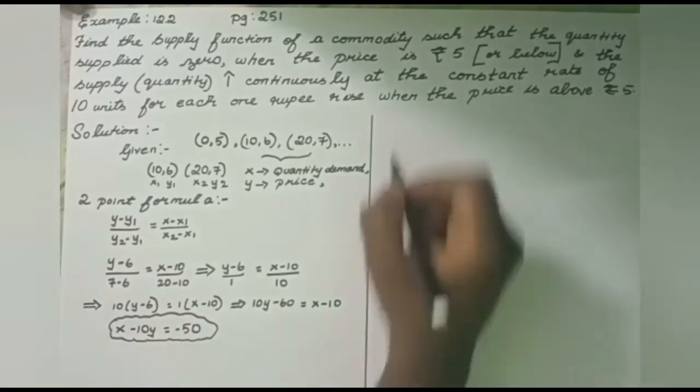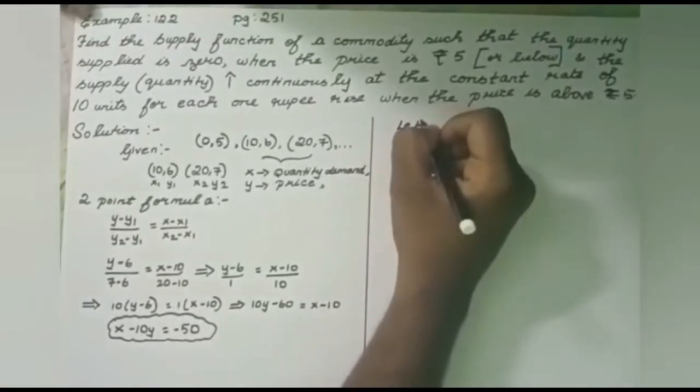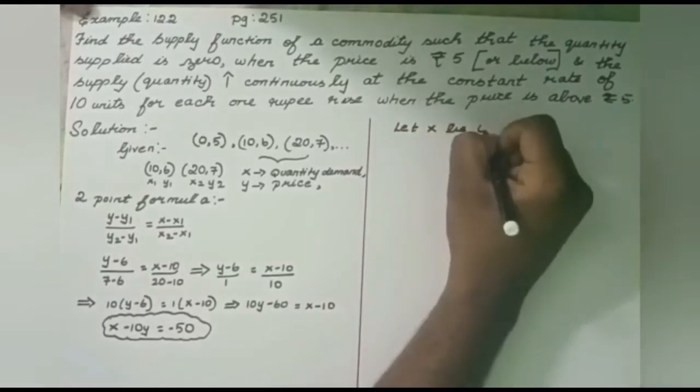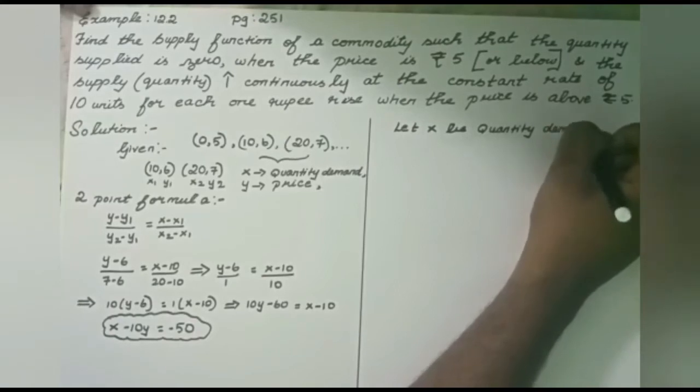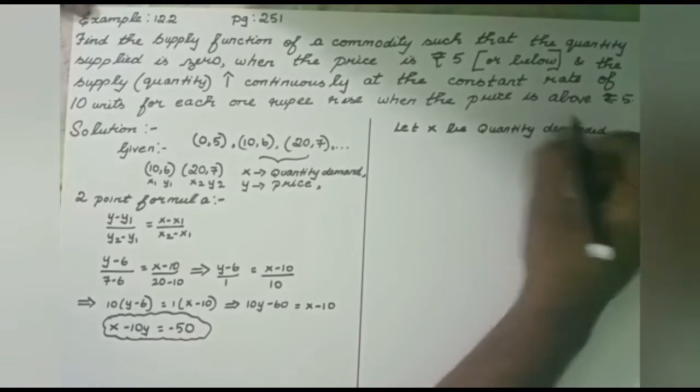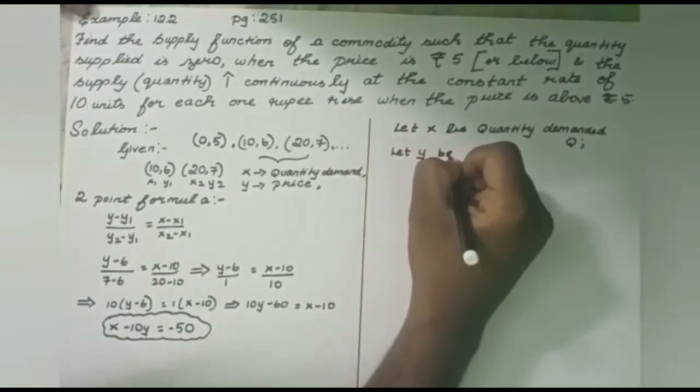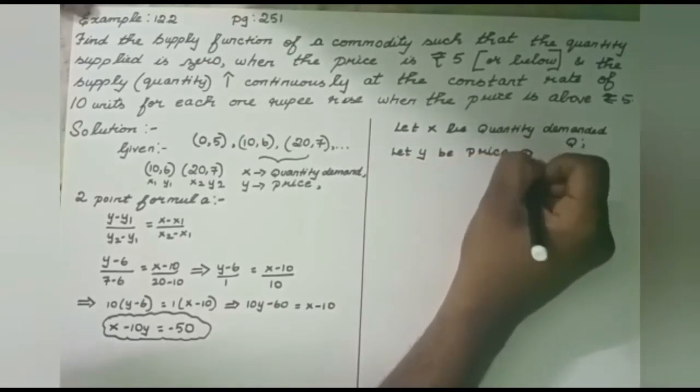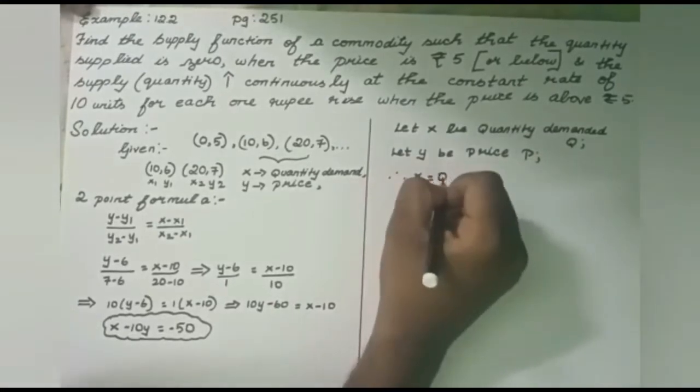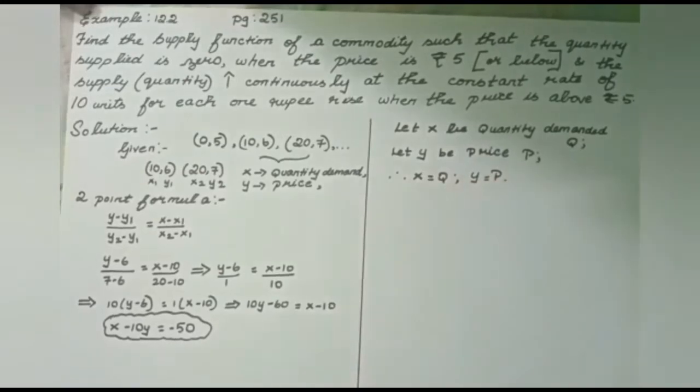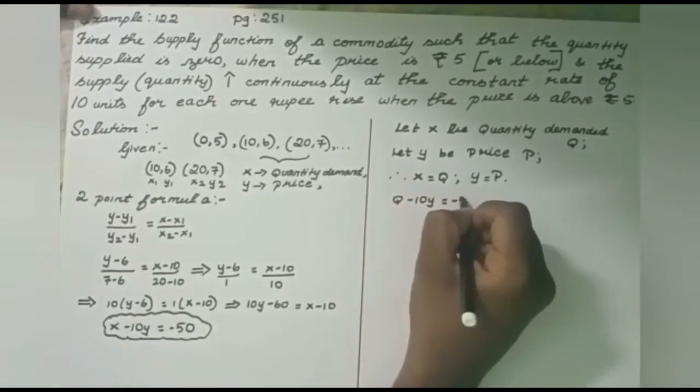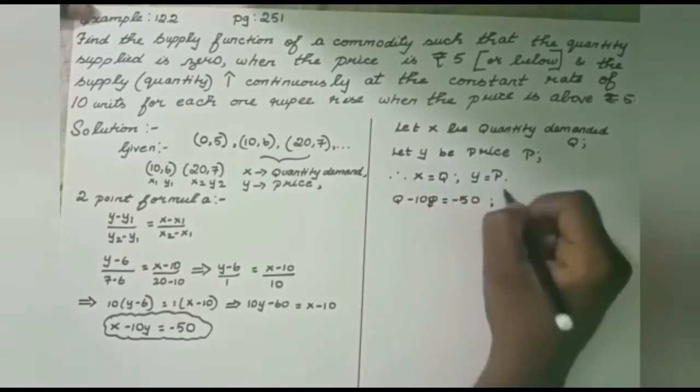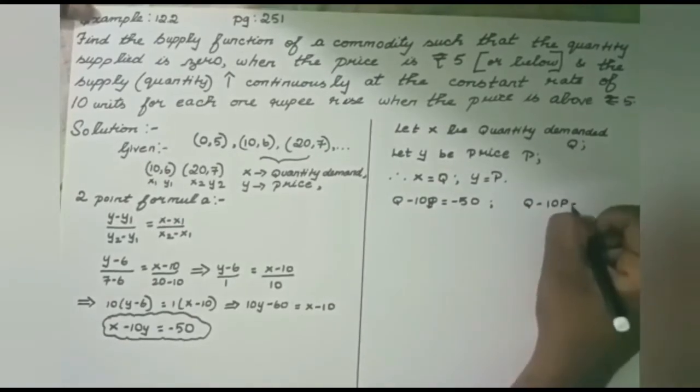Make yourself clear that we'll do cross multiplication. So 10 of y minus 6 equals 1 of x minus 10. Further simplification gives 10y minus 60 equals x minus 10. Keep in mind that x value should be positive, so we keep x term as is and shuffle the remaining terms. So x minus 10y equals minus 50. This is our derived answer. Now we apply this to the question by considering the words given. Let x be quantity demanded Q and y be price P. Applying x as Q and y as P, the equation further changes to Q minus 10P equals minus 50.